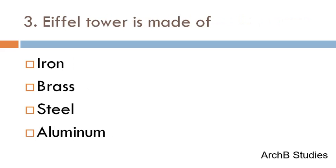The Eiffel Tower is made of — iron, brass, steel, or aluminium? The correct answer is iron.